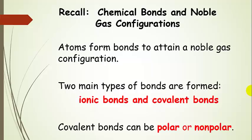Atoms form bonds with other atoms to attain a noble gas configuration. We've discussed two main types of bonds: ionic bonds and covalent bonds. We're going to set ionic bonds aside for now and focus on covalent bonds. There are two types of covalent bonds — either polar or nonpolar.